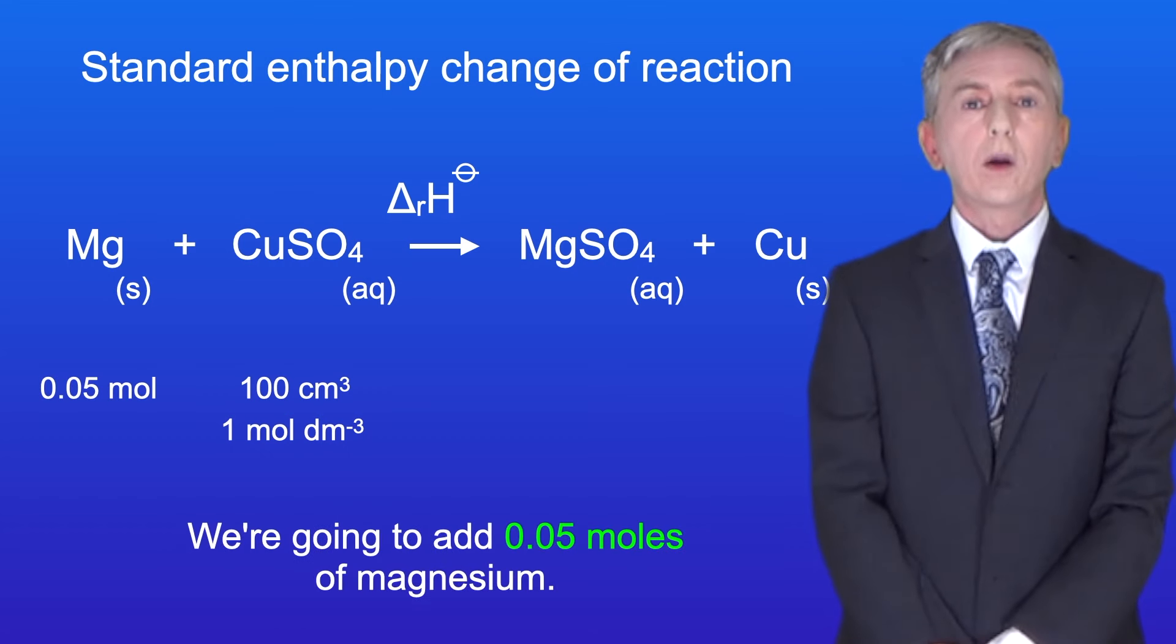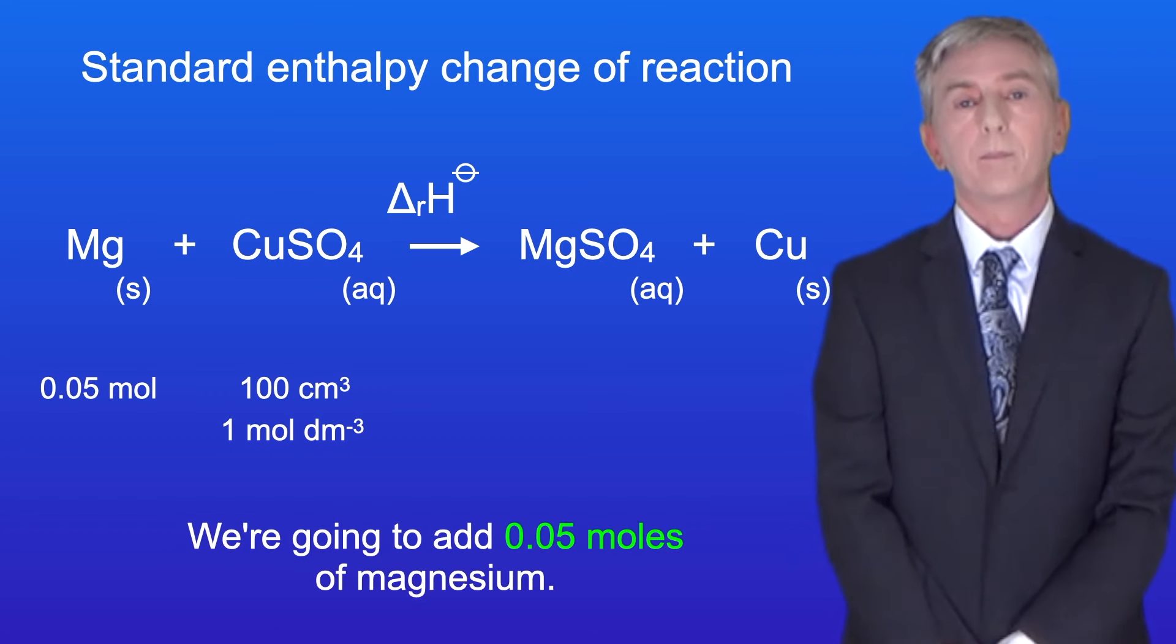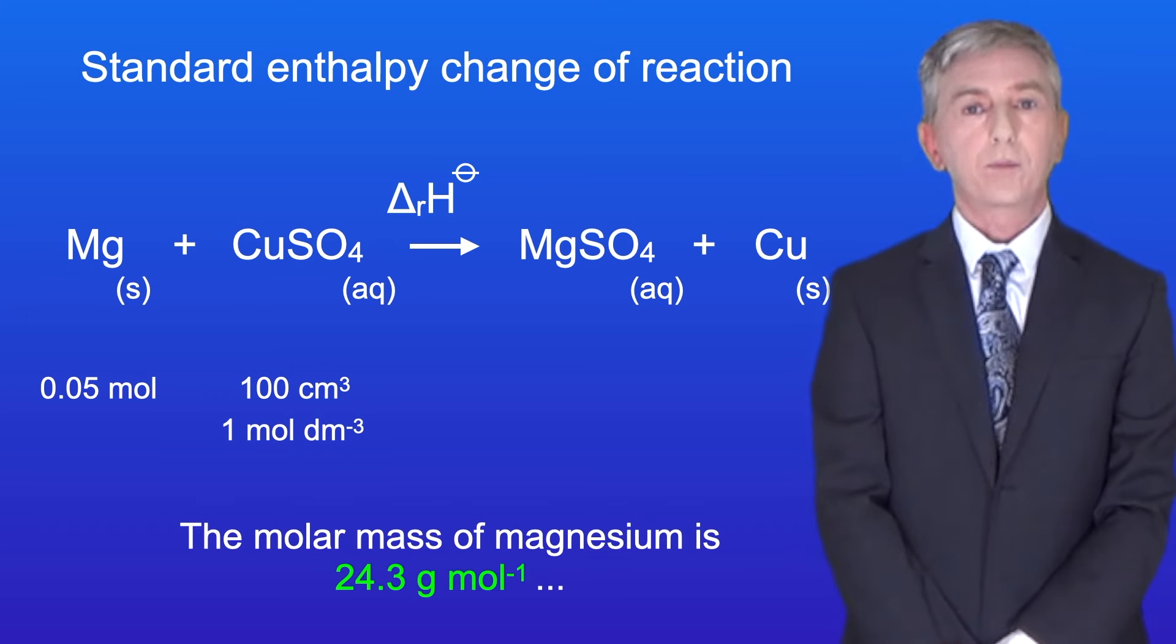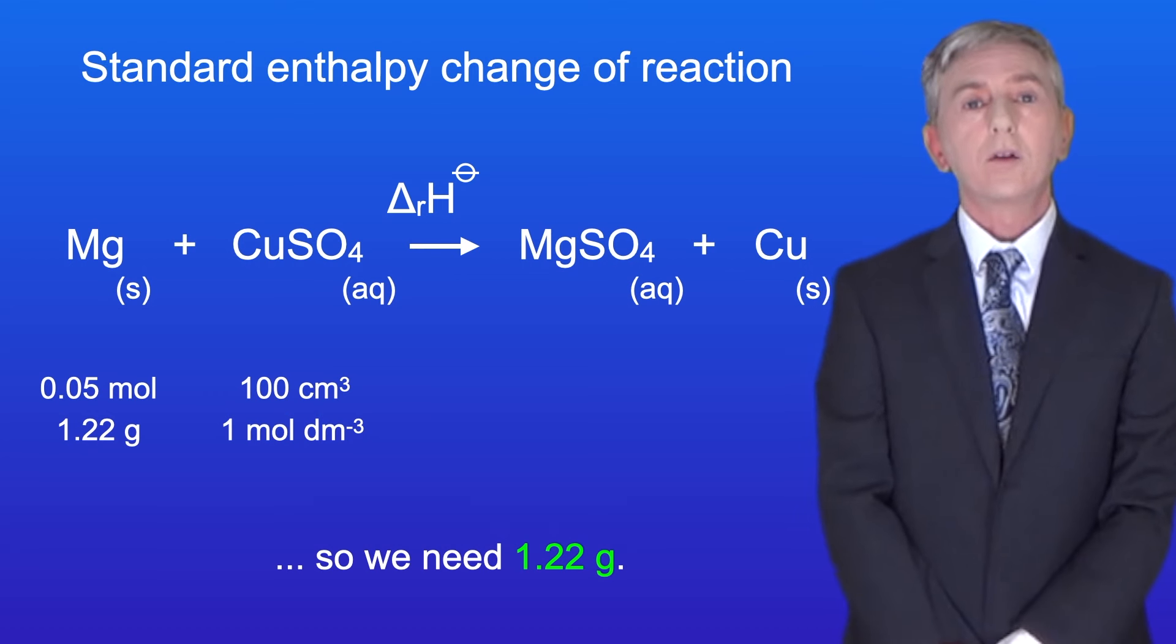We're going to add 0.05 moles of magnesium. The molar mass of magnesium is 24.3 grams per mole, so we need 1.22 grams.